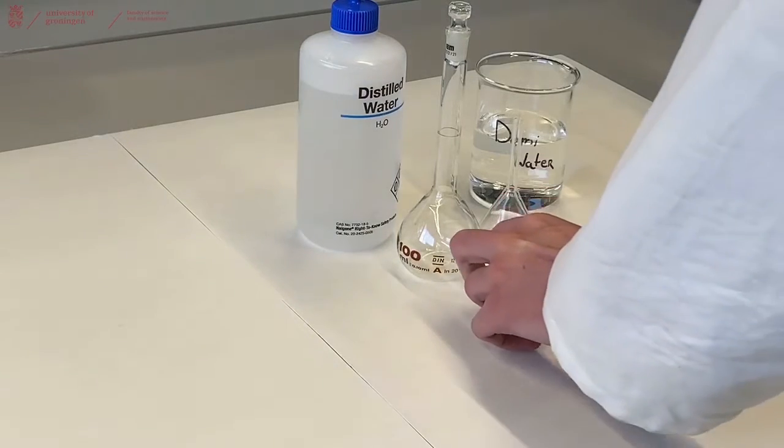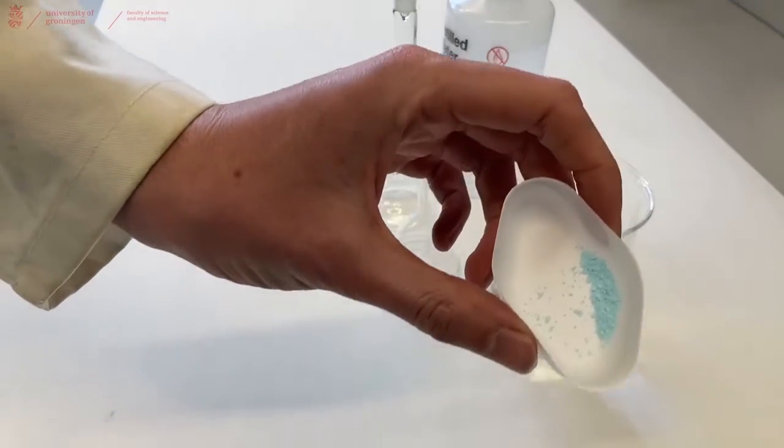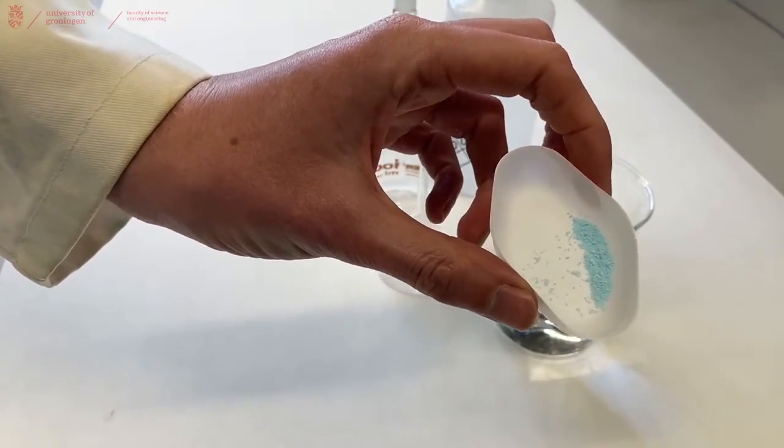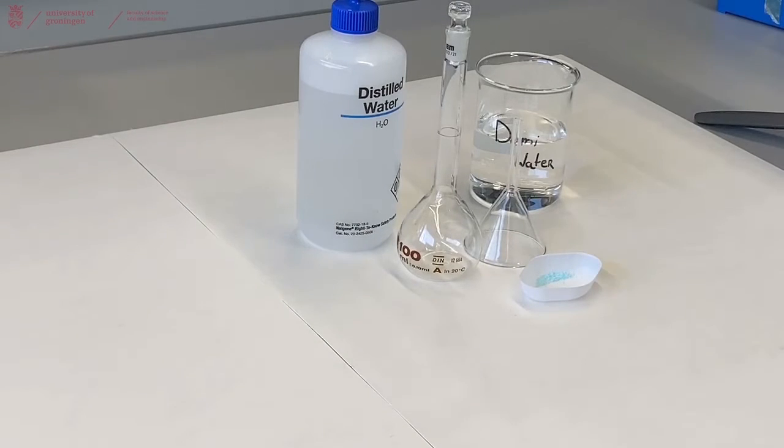So if you have a solid, you can weigh off a known quantity in a weighing boat and make sure that you note down how much this is. Or you can have a liquid where you pipette an exact amount of liquid, or you have a solution of known concentration and then you will dilute it into the new volumetric flask.